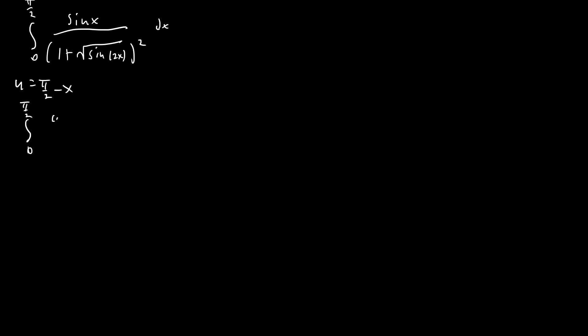We're going to end up with the integral from 0 to pi over 2 of cosine of u over 1 plus square root of sine of 2(pi minus 2u). But sine of pi minus x is just sine of x, so we end up with sine of 2u du. Now I'm going to rename this back to x and add it to our original integral, giving us cosine x and sine of 2x dx, both equal to our integral i.